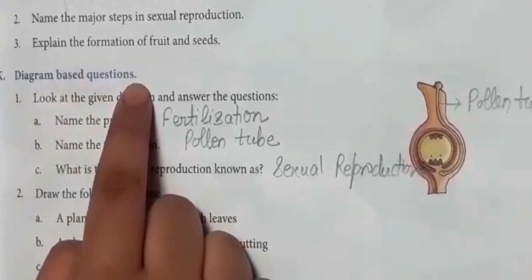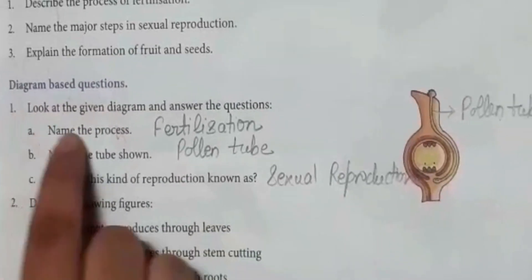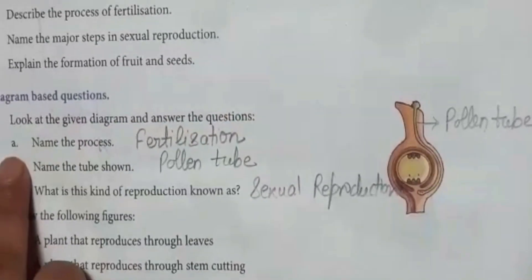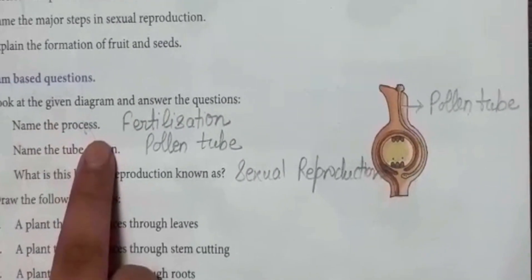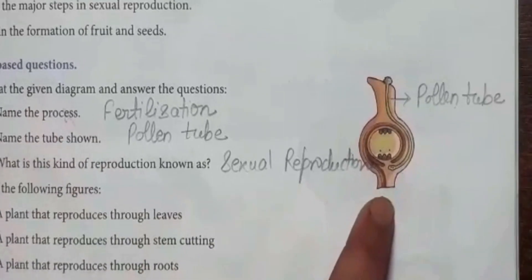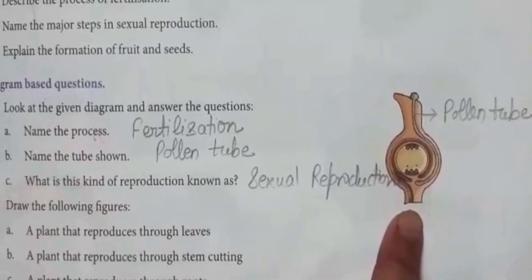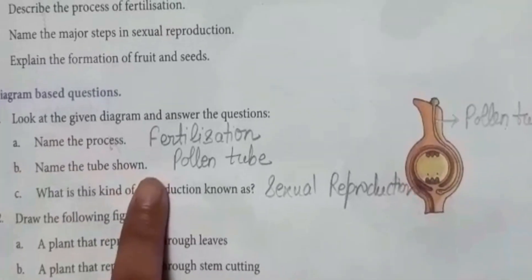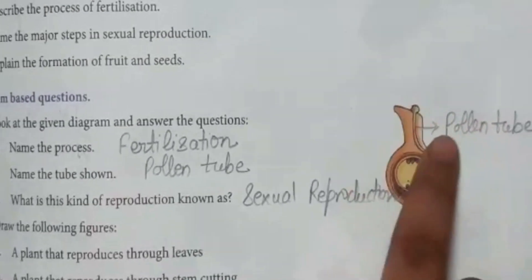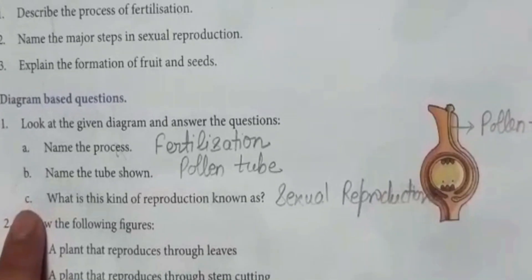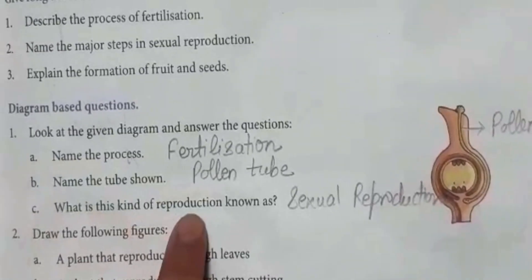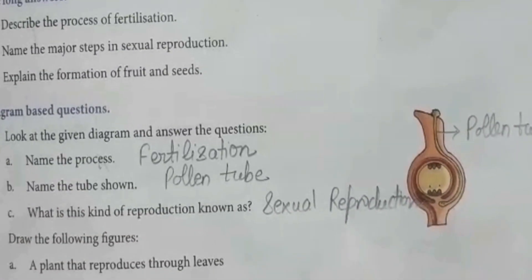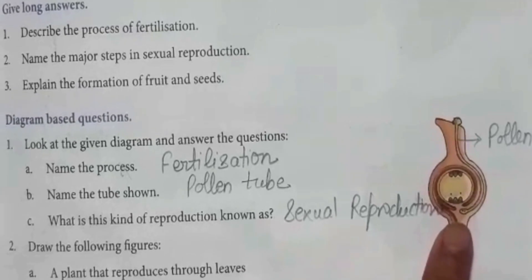K. Diagram based questions. First, look at the given diagram and answer the questions. A: Name the process — the process shown here is fertilization. B: Name the tube shown — this tube is known as pollen tube. C: What is this kind of reproduction known as? — This kind of reproduction is known as sexual reproduction.